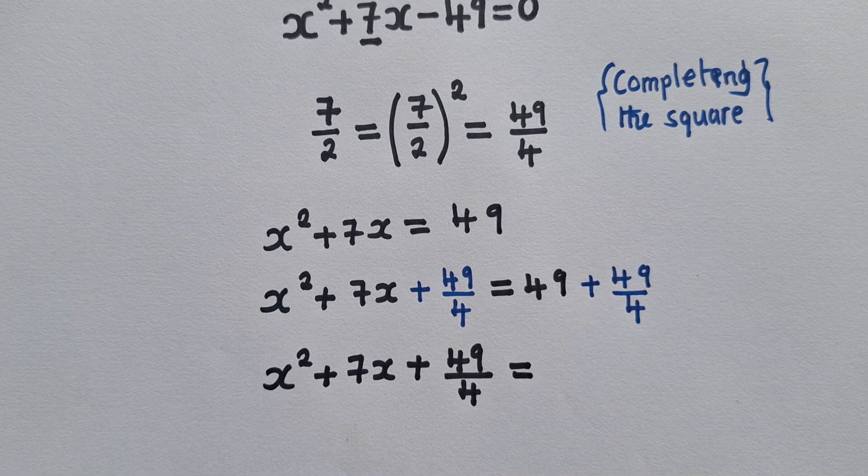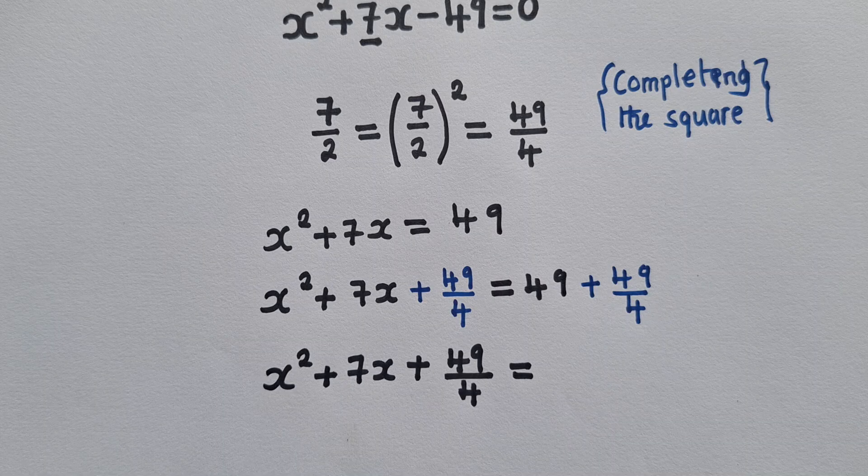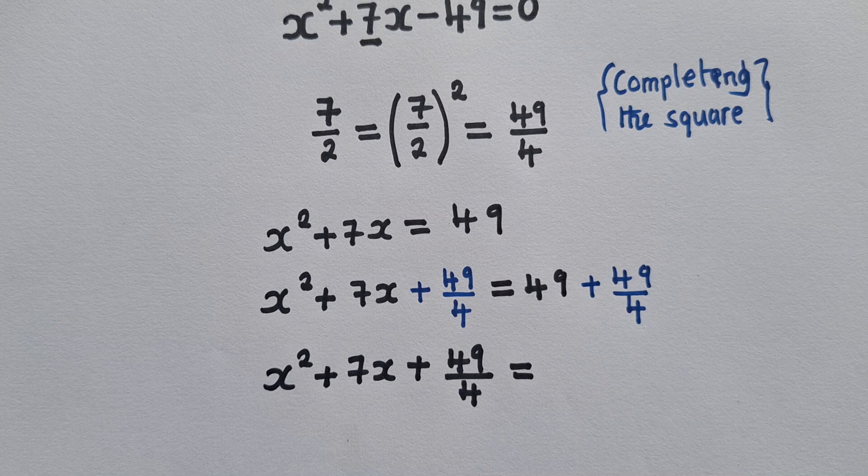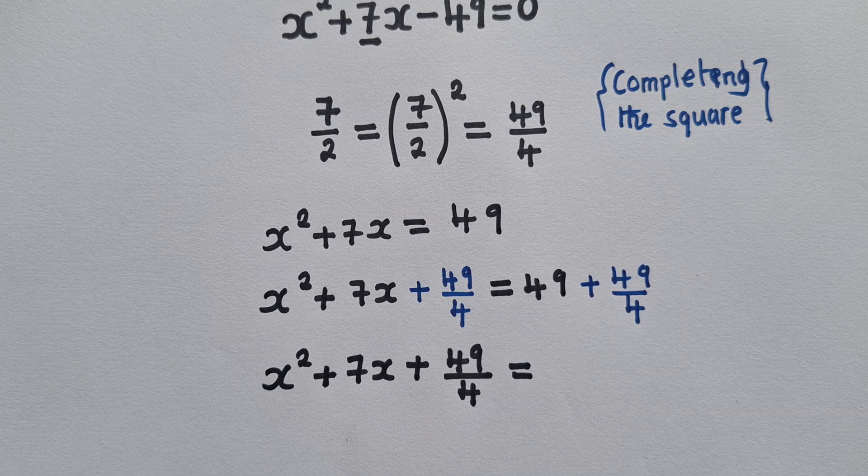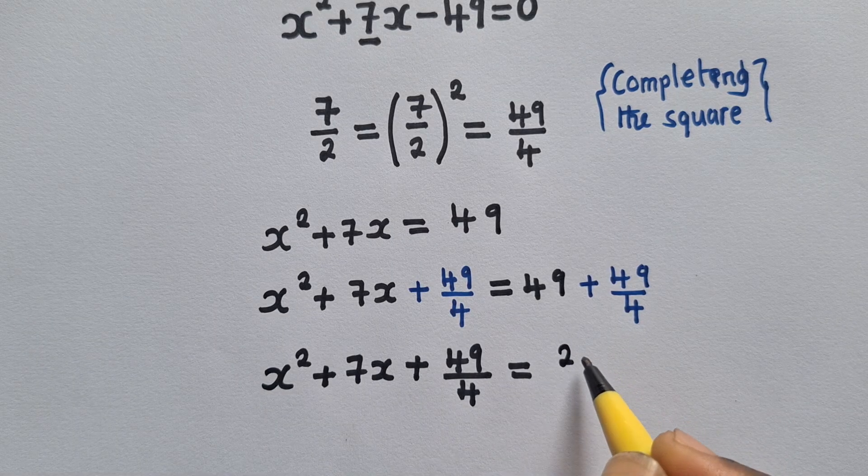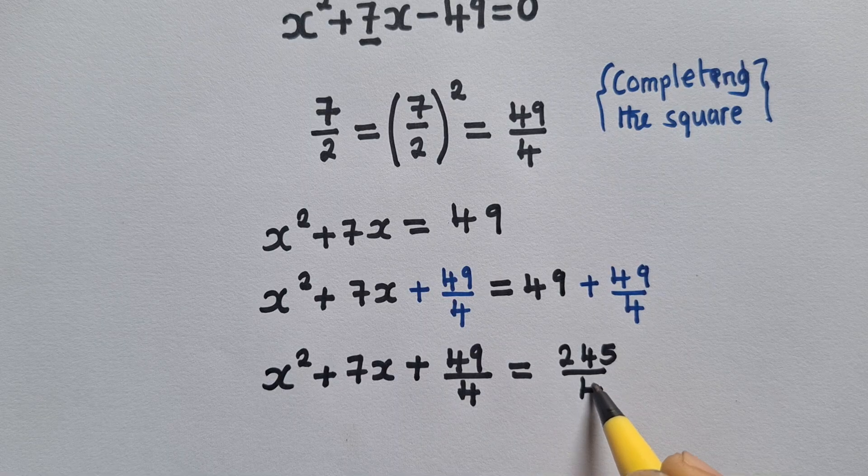Which is equal to, when we say 49 plus 49 over 4, this of course is giving us 245 over 4, like this.